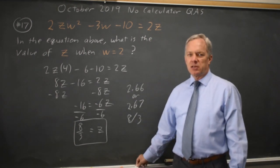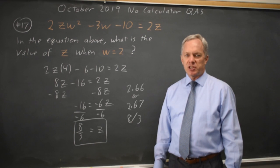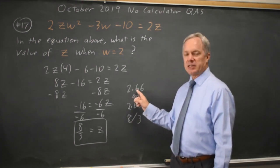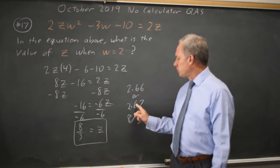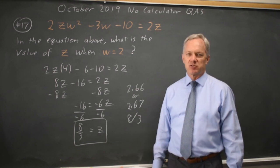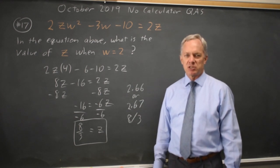When you're gridding in a decimal that does not fit, you have to fill all the boxes. So it would be 2 point and then 6s until you run out of squares, or you can round 2.666 up to 2.67 because that also runs you out of squares and that's the correct direction for rounding.